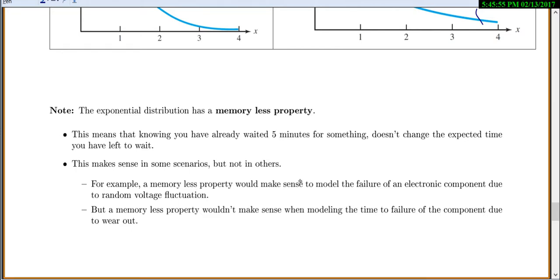So a memoryless property would make sense to model the failure of an electronic component due to random voltage fluctuation. Because in that case, it's just a random thing, so it's not really going to be affected by how much time you've already gone. But the memoryless property doesn't make sense when you're modeling the time to failure of a component due to wear out, because the longer you use it, the more likely you are to wear out.